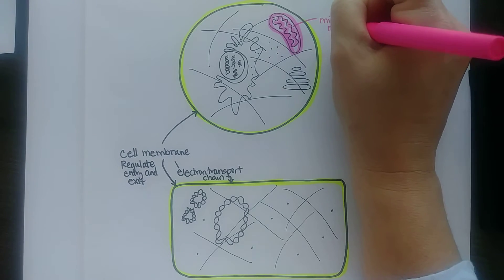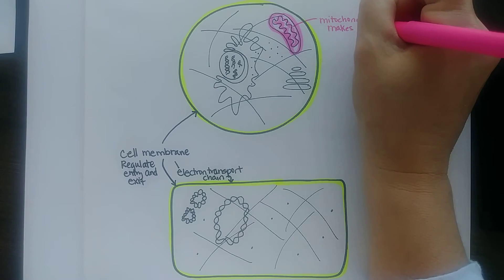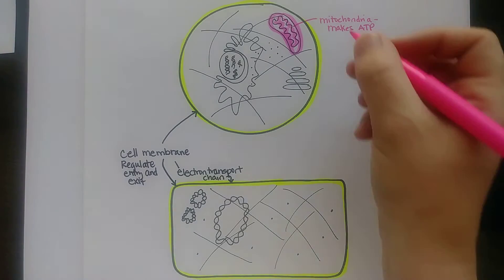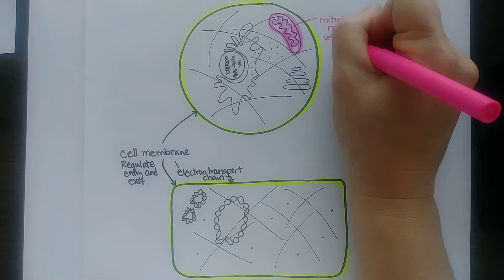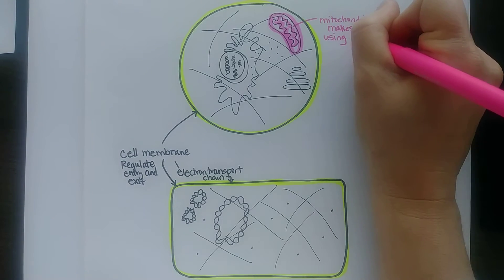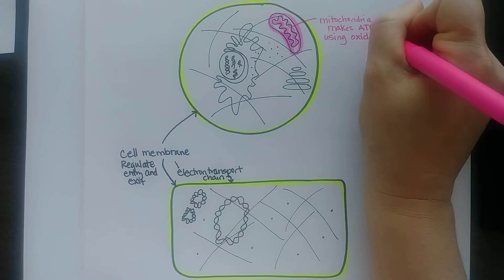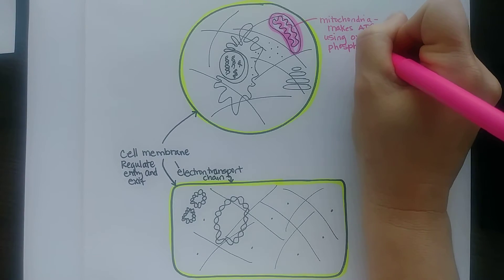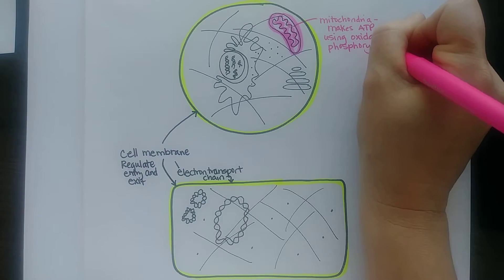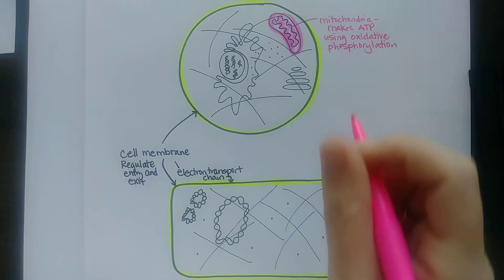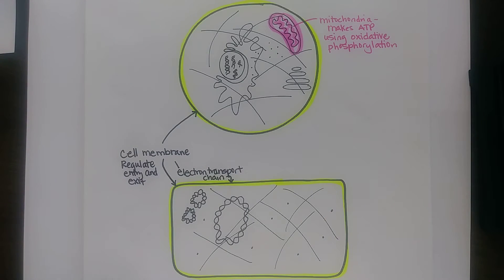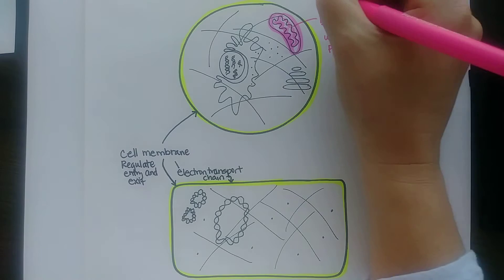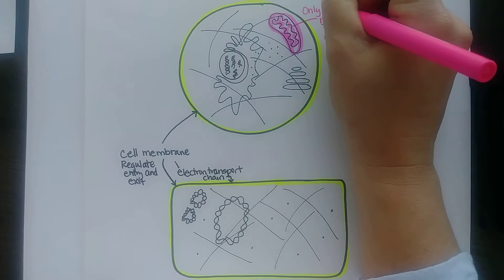The mitochondria makes ATP, and it does that with something called oxidative phosphorylation, meaning it uses oxygen and adds phosphates to ADP to make ATP. So the mitochondria is only found in eukaryotes.